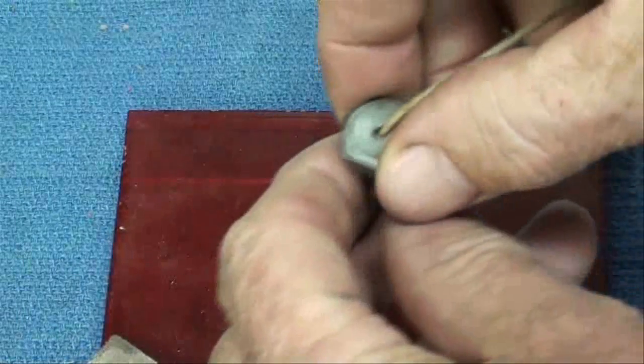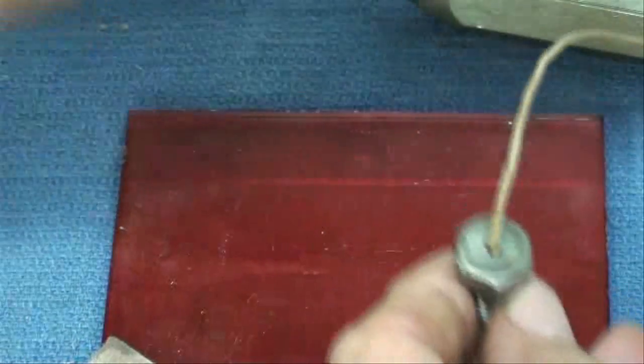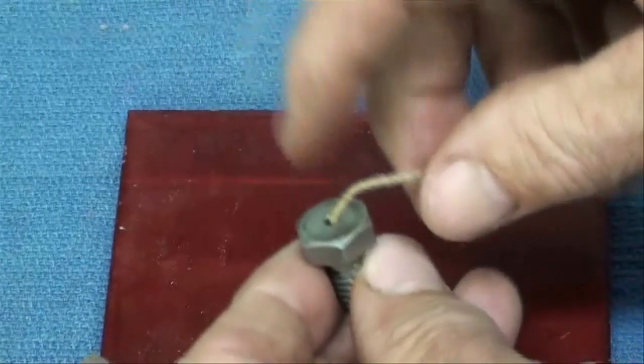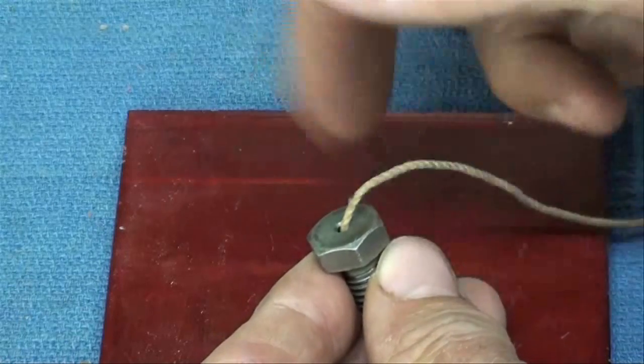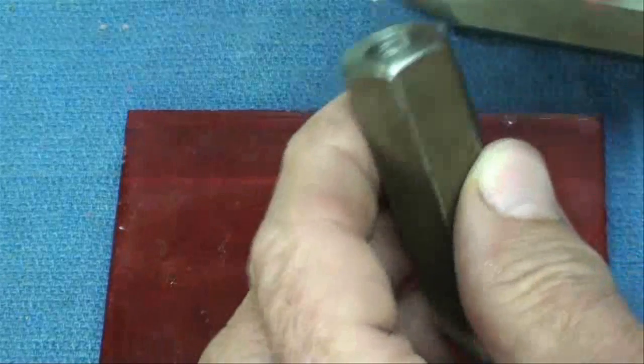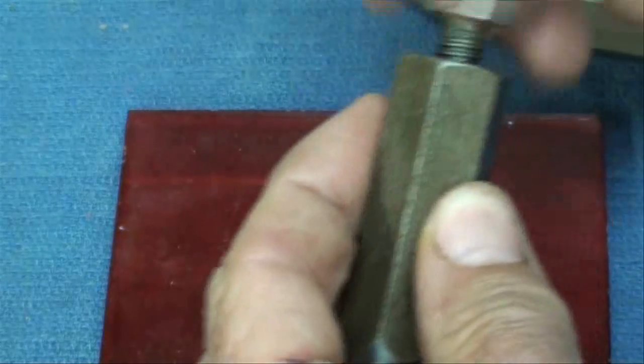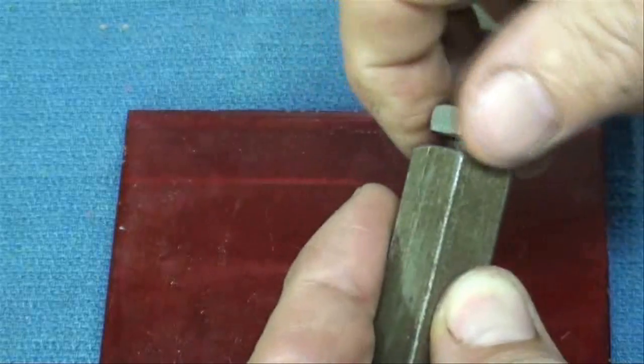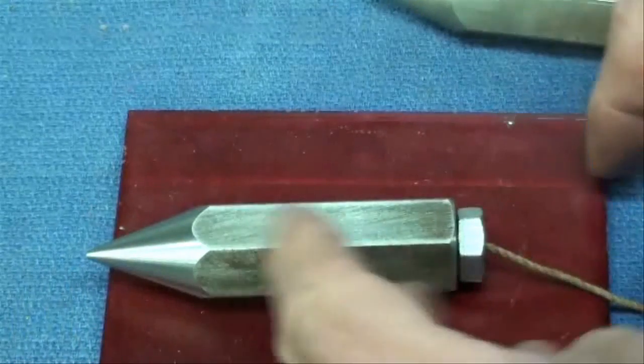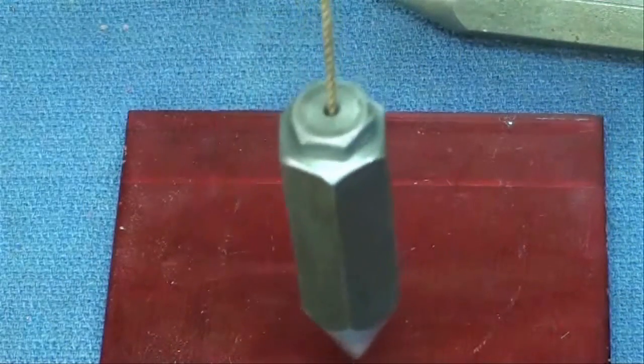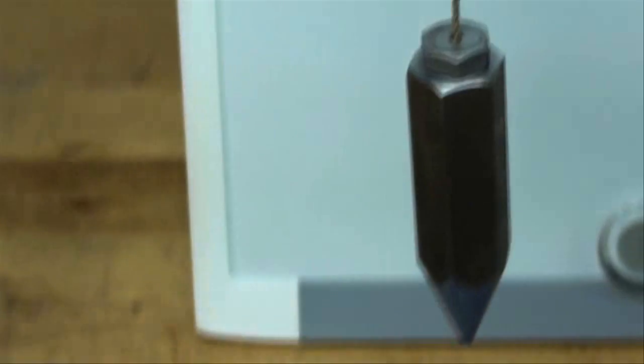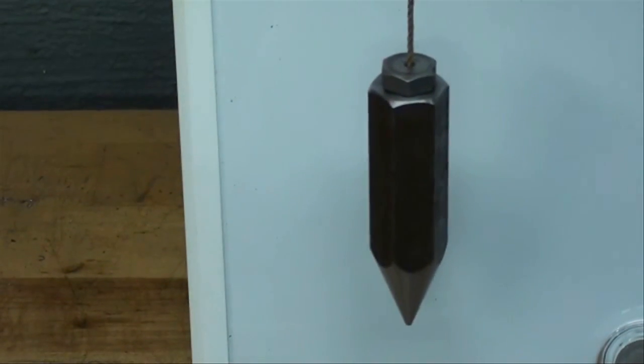Now as far as the bolt here, I did take a countersink and I countersunk both ends a little bit just by hand to remove the burrs and the sharp corners so it wouldn't cut the string. Then I put a piece of string in there, a mason string. This should screw all the way down flush now, and it does.